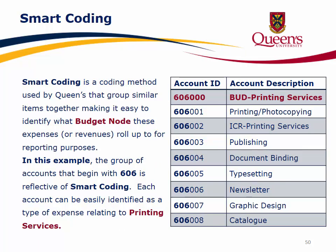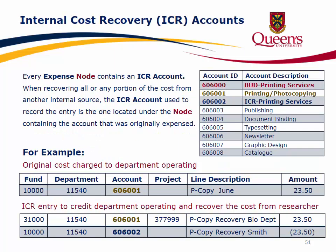Smart Coding is a coding method used by Queen's that groups similar items together, making it easy to identify what budget node expenses or revenues roll up to for reporting purposes. For example, the group of accounts beginning with 606 is reflective of Smart Coding — each account can be easily identified as a type of expense relating to printing services. Every expense node also contains an ICR (Internal Cost Recovery) account. When recovering all or any portion of the cost from another internal source, the ICR account used is the one located under the node containing the account that was originally expensed.